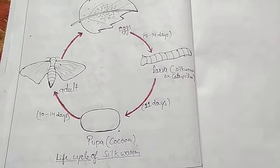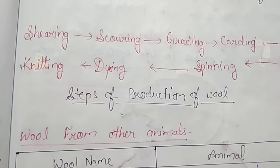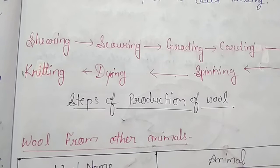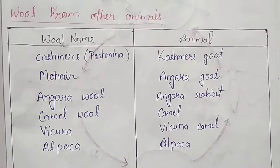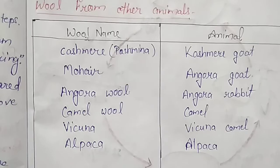Hello and welcome students. This video is part two of Fiber to Fabrics. In the last video we discussed the steps of production of wool: shearing, scouring, grading, carding, spinning, dyeing, and knitting. Here a table is given of animals that give wool. As you can see, we get wool from many animals like sheep, goats, camels, and rabbits.